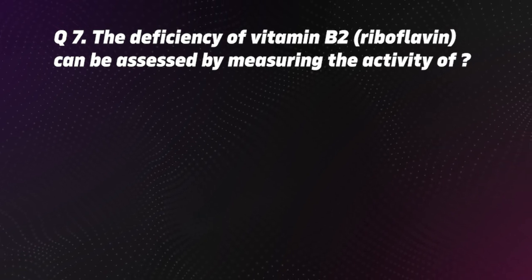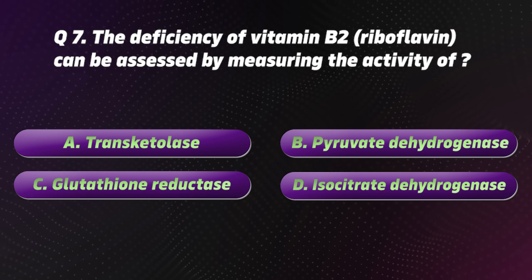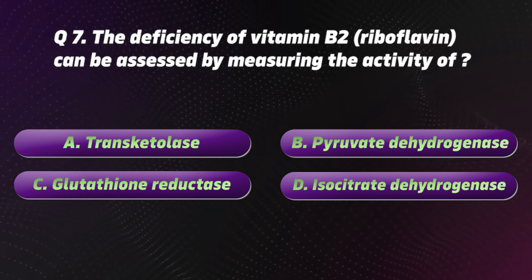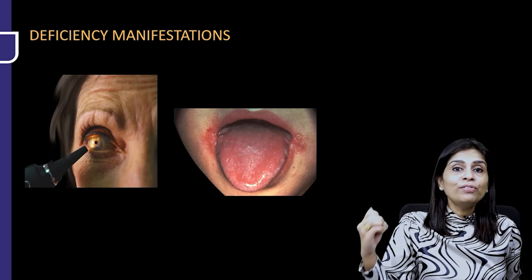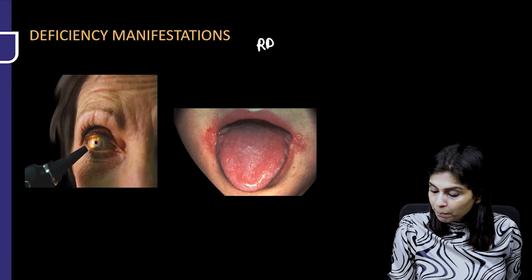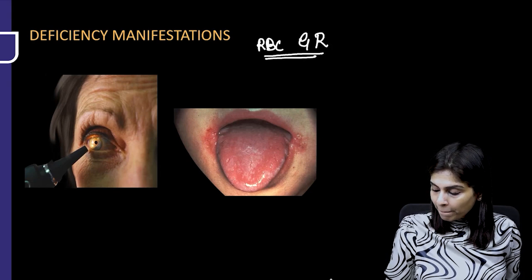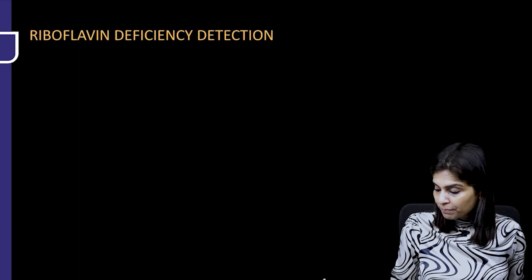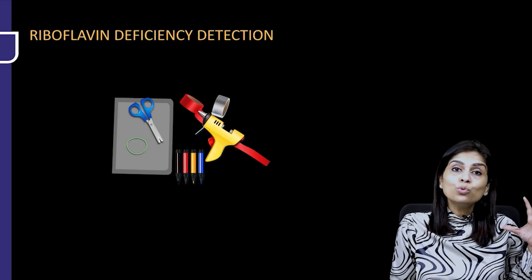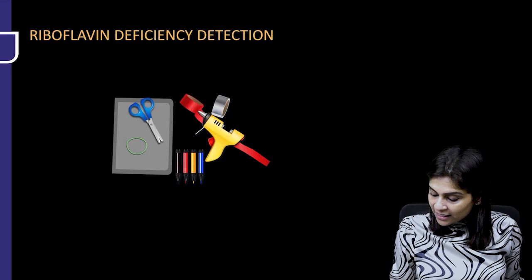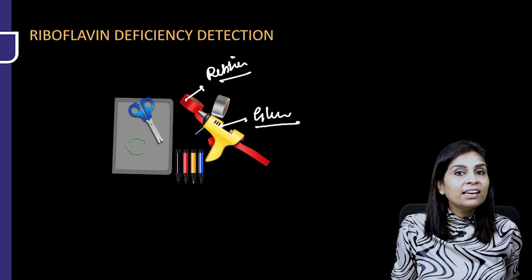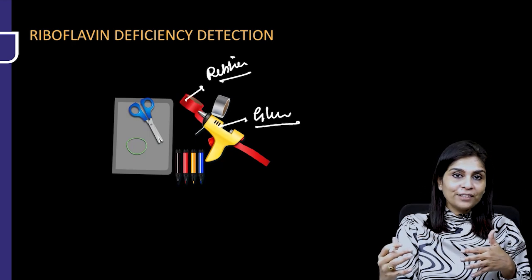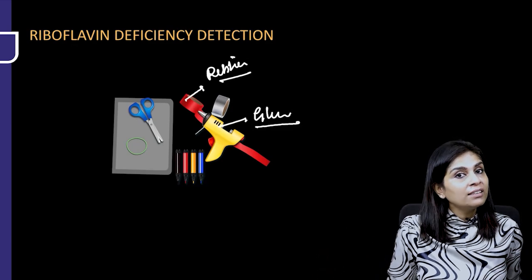Question 7. The deficiency of vitamin B2 (riboflavin) can be assessed by measuring the activity of: A. Transketolase, B. Pyruvate dehydrogenase, C. Glutathione reductase, D. Isocitrate dehydrogenase. The correct option is C, Glutathione reductase. To diagnose riboflavin deficiency, we estimate RBC glutathione reductase activity. A memory tip: ribbon and glue go hand in hand in artwork — riboflavin deficiency is assessed by glutathione reductase activity in RBCs.